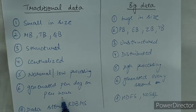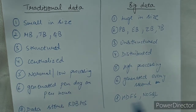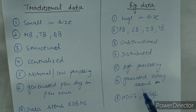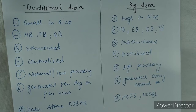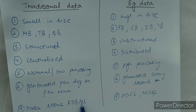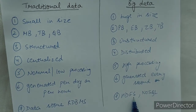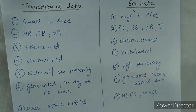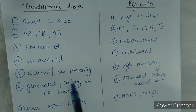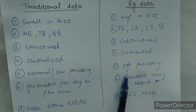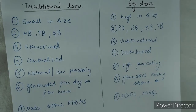Traditional data is generated per day or per hour, whereas big data can be generated every second or even every millisecond if it is huge. For storage, traditional data is stored in RDBMS, whereas big data is stored in HDFS — Hadoop Distributed File System — and NoSQL. We will study these further in upcoming videos. I hope everything covered in this video is understood. Thank you.